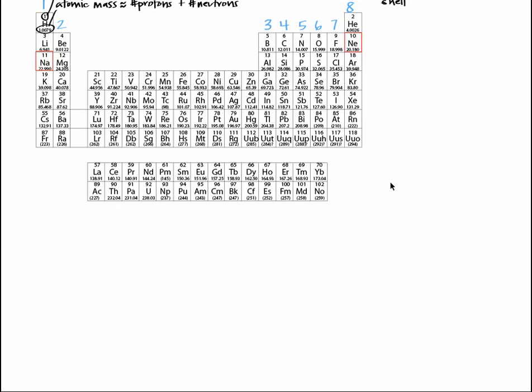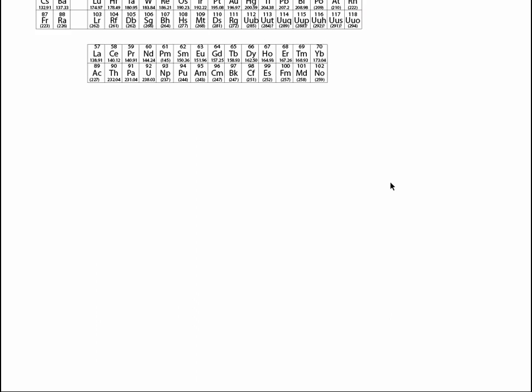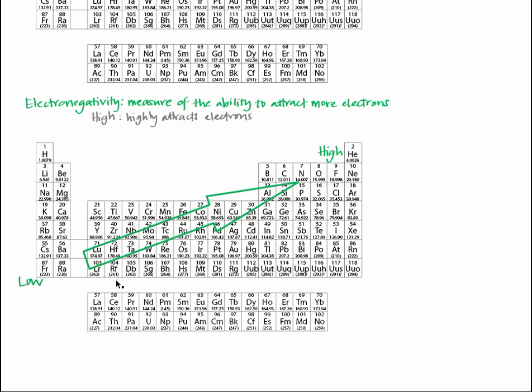Atoms also differ in their ability to attract more electrons. This ability is called electronegativity. Think about it as the ability of an atom, which has a set number of protons, neutrons, and electrons, to attract an outside electron and bring it into an electron shell. An atom is highly electronegative when it really attracts electrons to itself. In general, electronegativity increases as you move up and to the right along the periodic table, ignoring the far right column.